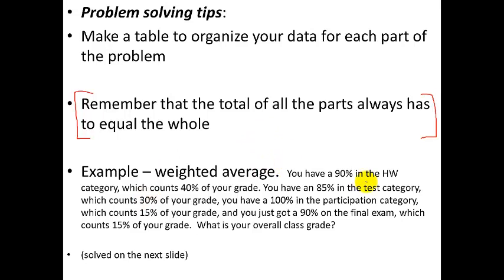So here's an example. Weighted average. This is just like your Gradescape. Suppose your homework category counts 40%, and you have a 90% in the homework category. Your test category counts 30%, and you have an 85% in that category. You have 100% in participation, but that's only counting 15% of your grade. And finally you've got a 90% on the final exam, which also counts 15%. What's your overall class grade?